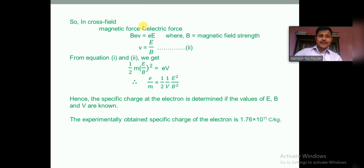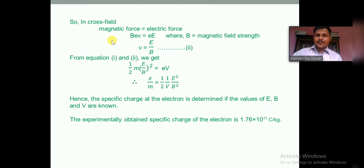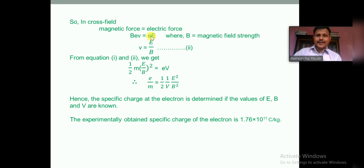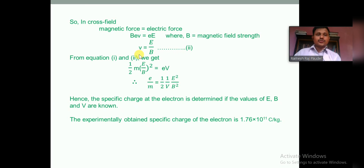In cross field, the magnetic force experienced by the electron beam equals the electric force. When the electron beam enters the magnetic field perpendicularly, the magnetic force equals Bev and the electric force equals eE. Setting these equal, the small e cancels, giving v = E/B. Therefore, the velocity of the electron beam in the cross field must equal the ratio of the electric field strength E to the magnetic field strength B.